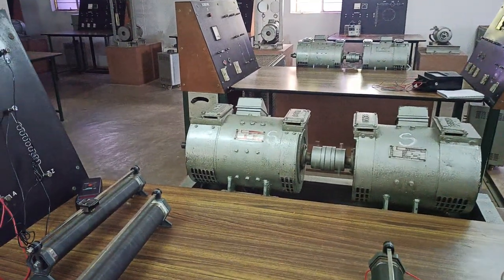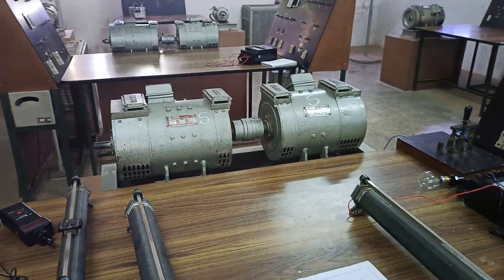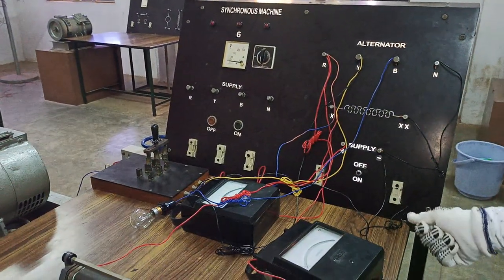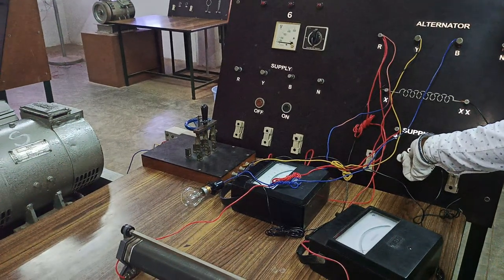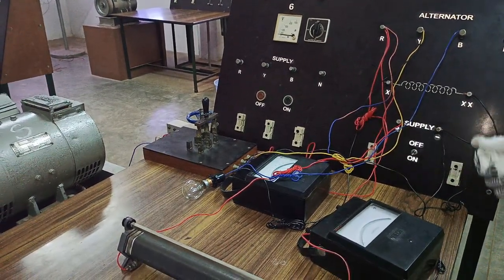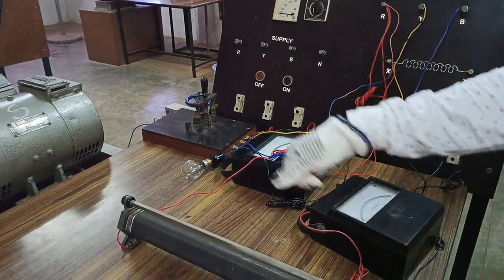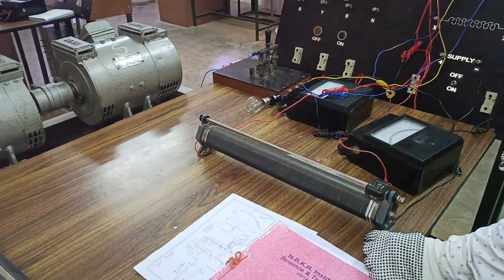After rotating this prime mover we are going to use this excitation system and we are going to give the supply. How to excite this system is turn on the DC excitation. As soon as you turn on the DC excitation you have to adjust this potential divider.